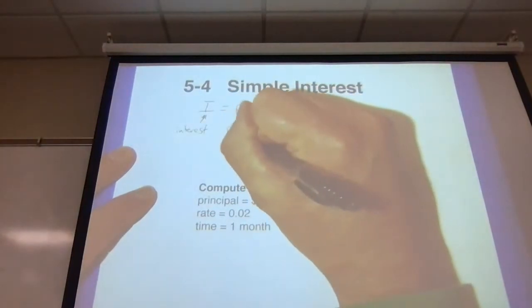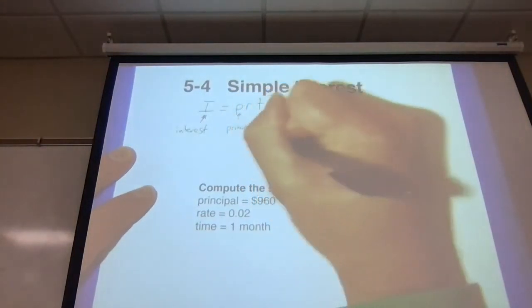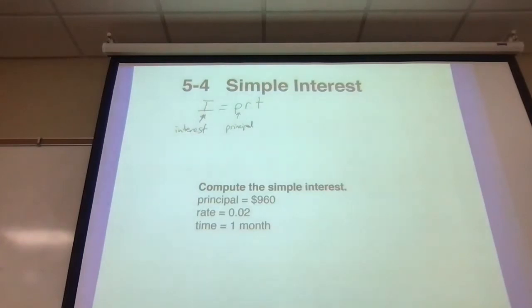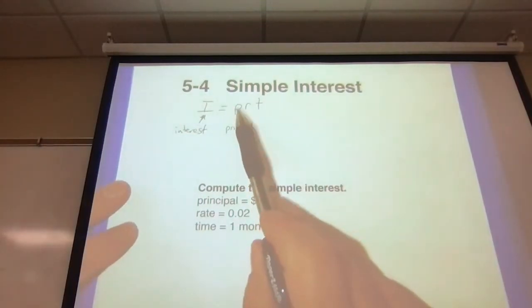P stands for principal. Principal is the amount of money. So in the problem, they're going to give you an amount of money that you're going to invest or you're going to get interest on. That's what's going to represent the principal.